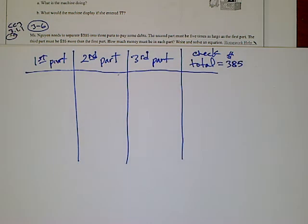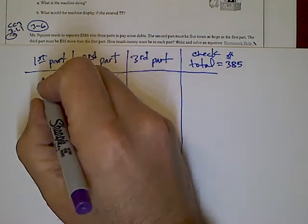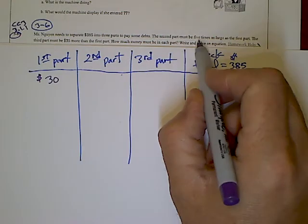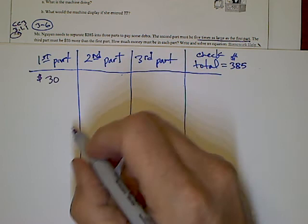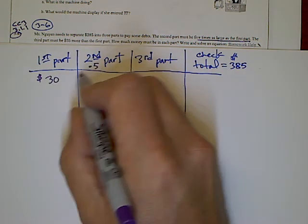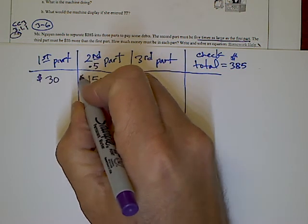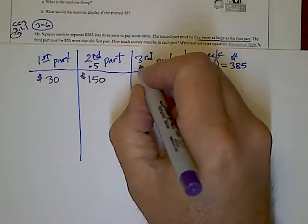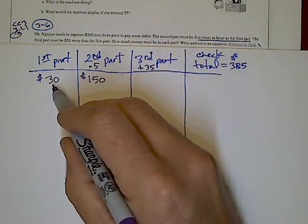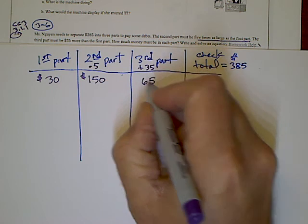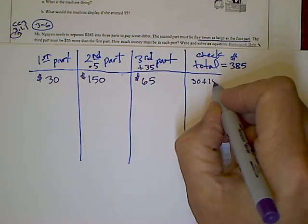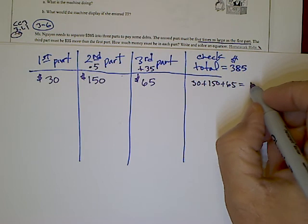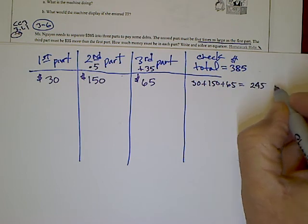Let's make a first guess of $30. The second part is five times as large as the first part, so I multiply by five to get $150. The third part is $35 more than the first part, so $30 plus $35 is $65. If I add those up, $30 plus $150 plus $65 equals $245, and that's too low.